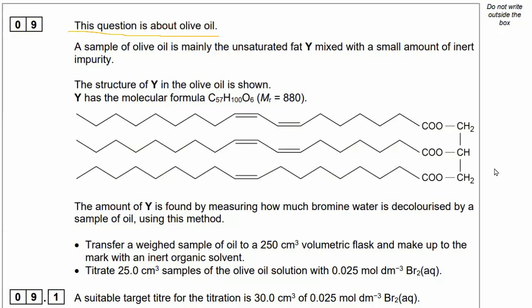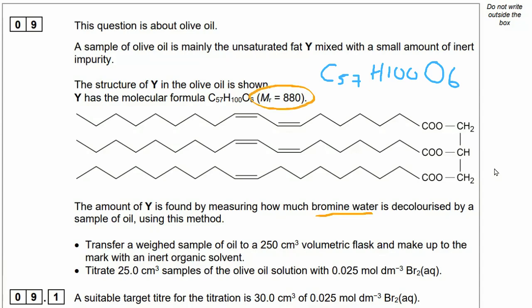Welcome to Let's Get to the Marks. This question is about olive oil. A sample of olive oil is mainly the unsaturated fat Y mixed with a small amount of inert impurity. The structure of Y in the olive oil is shown. Y has the molecular formula C57H100O6 and the MR is 880. The amount of Y is found by measuring how much bromine water is decolourised by a sample of oil using this method.